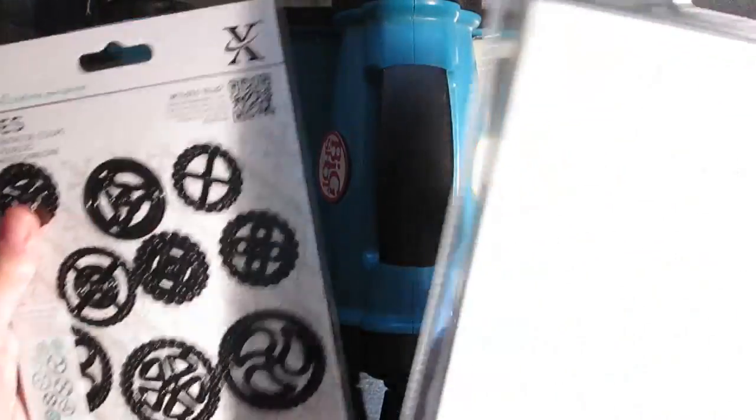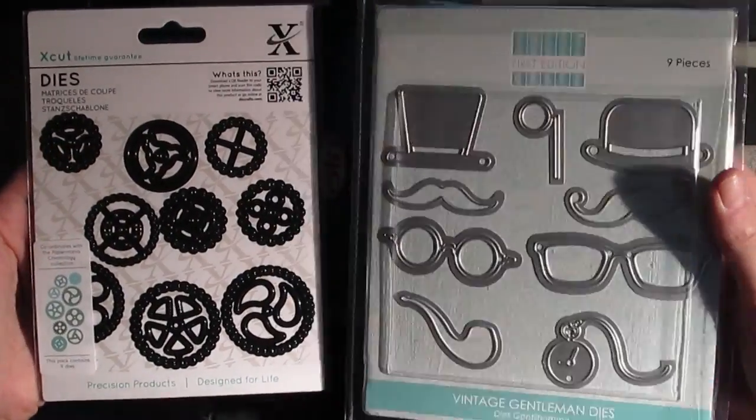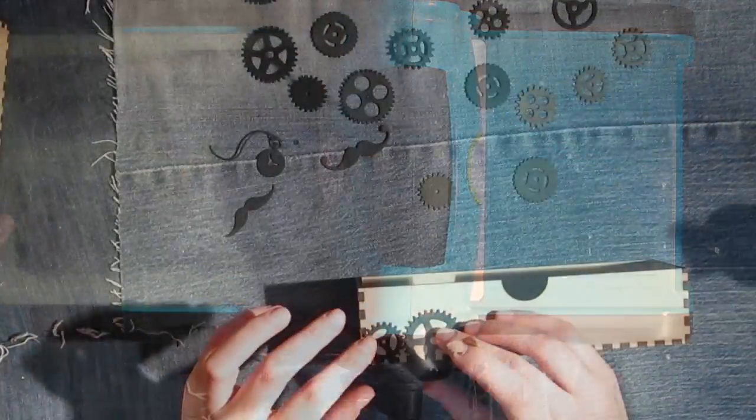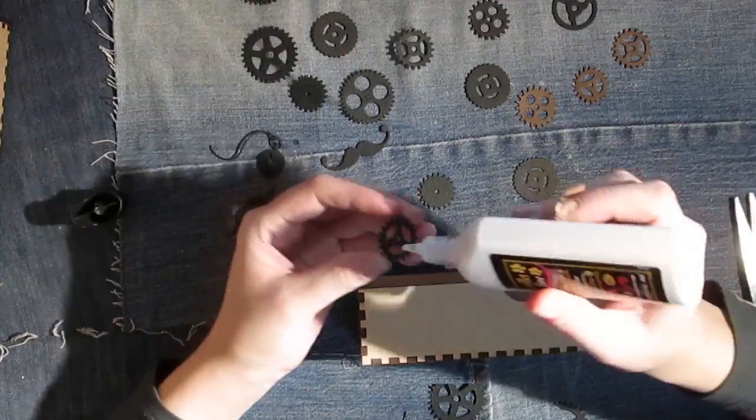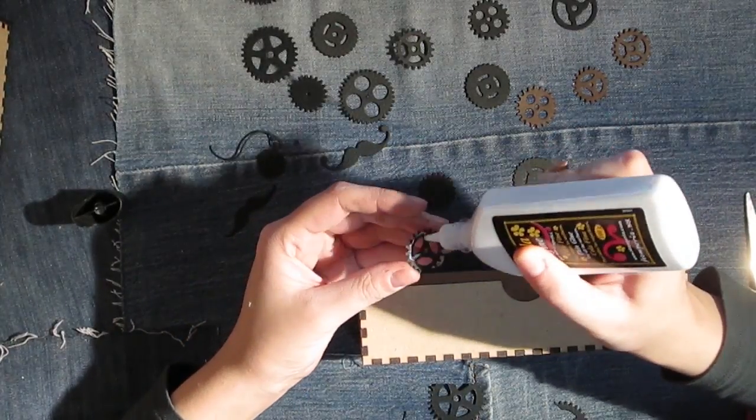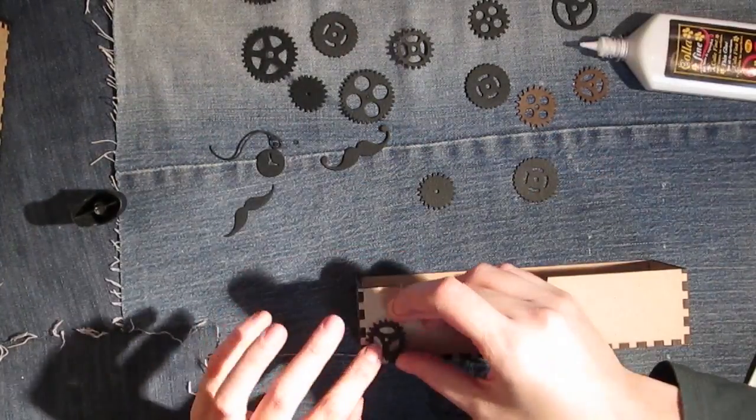Now, with my big shot, I cut some gears and cogs die cuts with my X-cut and my first edition dies. And I use them to decorate the front of the drawers. And I simply use white glue.